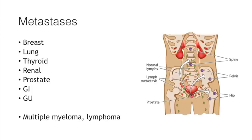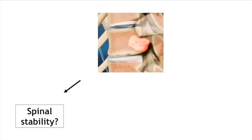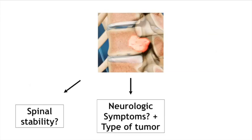Shifting completely to metastatic disease: breast, lung, thyroid, renal, prostate, GI, and GU cancers are most common. Multiple myeloma and lymphoma are not metastases per se but have a similar treatment paradigm. When thinking about how to treat metastatic tumors, I consider three things: spinal stability, neurologic symptoms and tumor type, and the patient's prognosis.